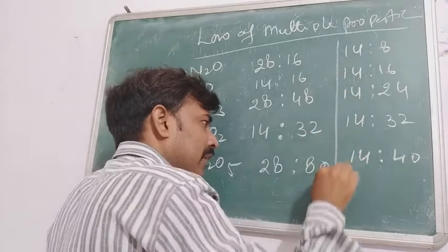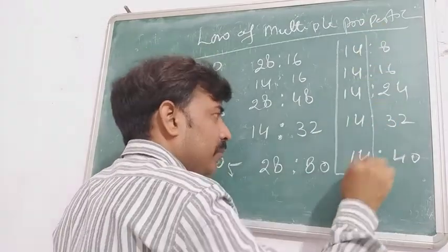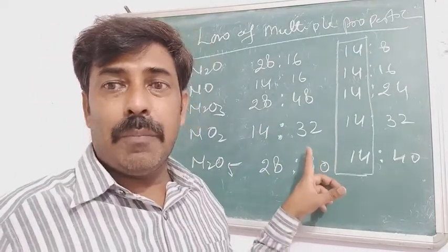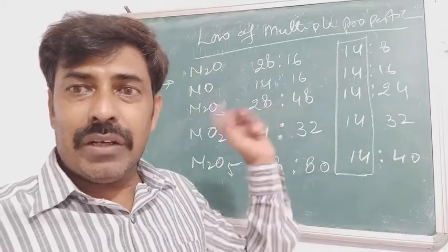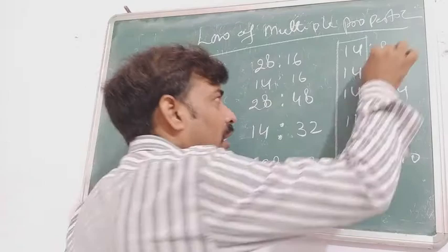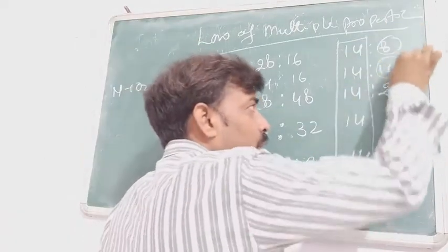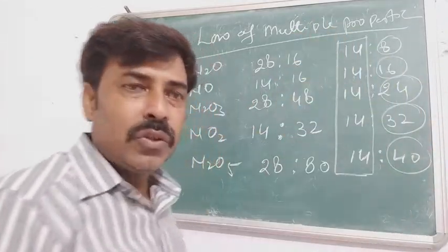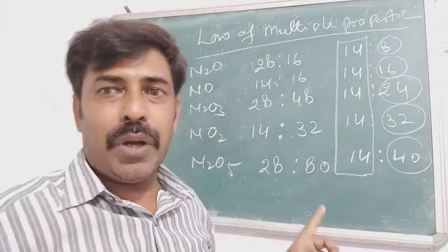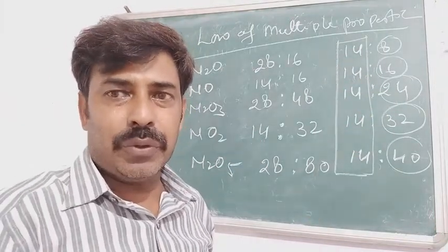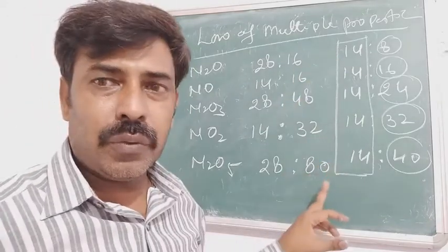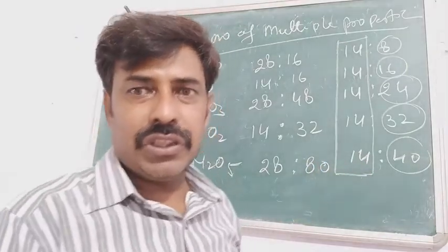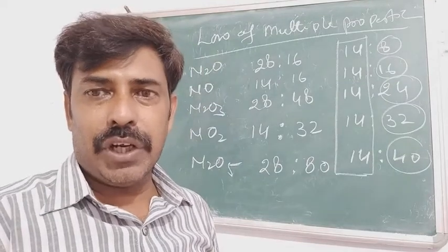Here you can see that the mass of nitrogen is constant at 14 g. According to the law, the constant amount of the first element reacts with a multiple amount of the second. The oxygen amounts are 8, 16, 24, 32, and 40 — that is, 1×8, 2×8, 3×8, 4×8, and 5×8. So the mass of oxygen is in multiple proportion. This is the law of multiple proportions: the constant amount of the first element reacts with the multiple amount of the second to form more than a single compound.